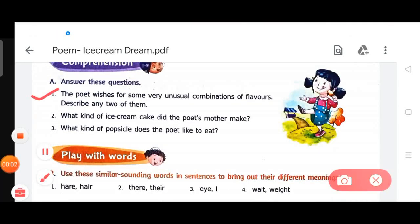First one: the poet wishes for some very unusual combinations of flavors, describe any two of them. Answer is here: the poet wishes for some very unusual combinations of flavors like first ice cream with hot garlic cheese, and second a dash of chili sauce in it.